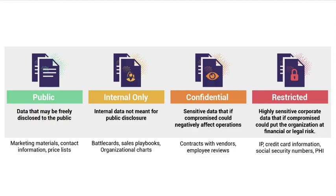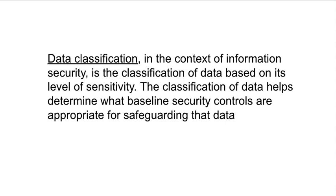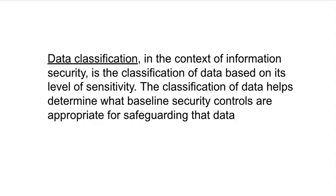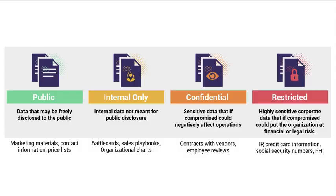Now let me explain data classification. There are types of data and classification — these are different things. Classification in the context of information security is the classification of data based on its level of sensitivity. There are different levels that determine how people can get access to the information.